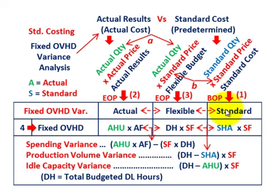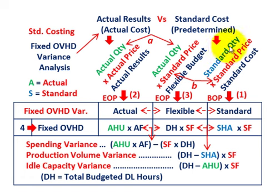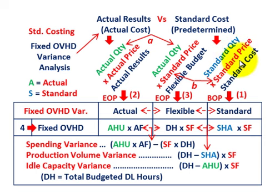Let's start with our standard cost. That's taking some standard quantity times some standard price. In this case, we're working with fixed overhead, so on a unit basis you're going to have some standard quantity of direct labor. We're going to base our allocation for fixed overhead on direct labor — standard quantity of direct labor times a standard price or unit price for fixed overhead. That's our standard cost.